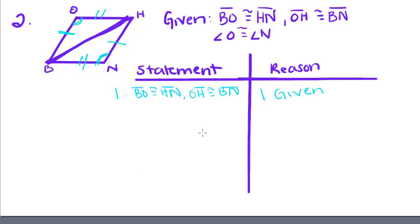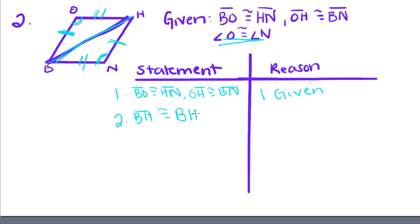Now, if we want to say that certain parts are congruent, we can prove the triangles congruent first, then say their corresponding parts are congruent. So far we have one side equal to one side, and two sides equal to two sides. They also share side BH, so we can say BH is congruent to BH by the reflexive property.